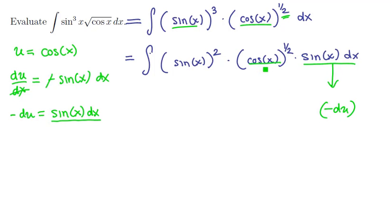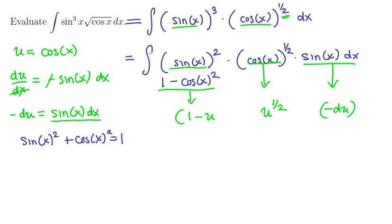we can see that we do in fact fit the differential. So let's replace it by du negative. The cosine of x can be replaced with u, so we'll have u to the one-half power. But then we've got the sine of x to still deal with. Well remember that sine of x quantity squared plus cosine of x quantity squared is 1. That's the Pythagorean identity. That means that the sine of x squared is the same thing as 1 minus the cosine of x squared. And that means we can replace this with 1 minus u squared.